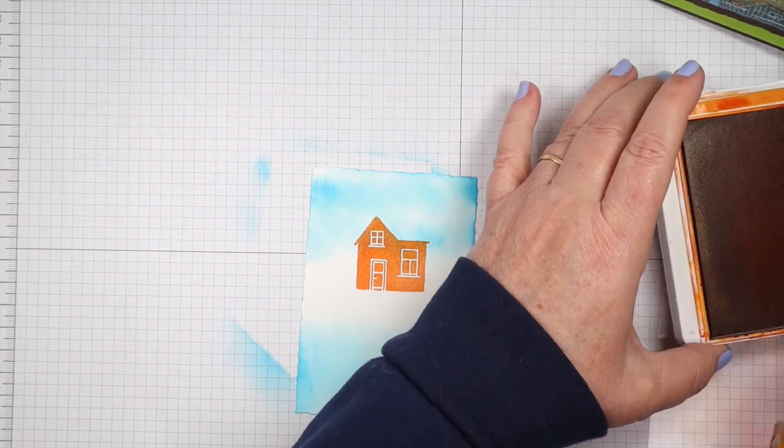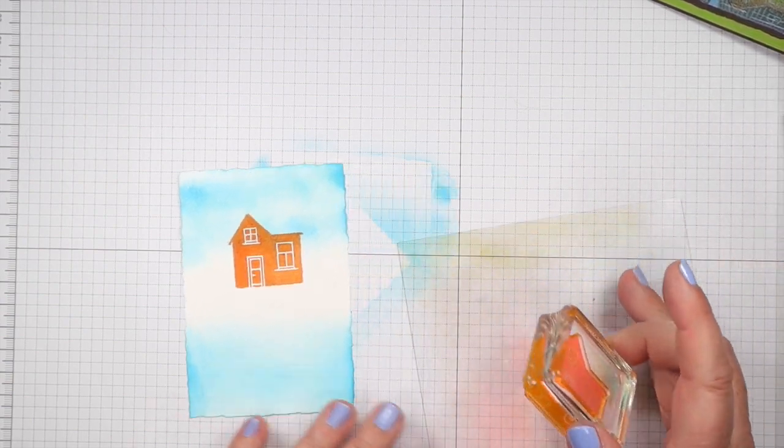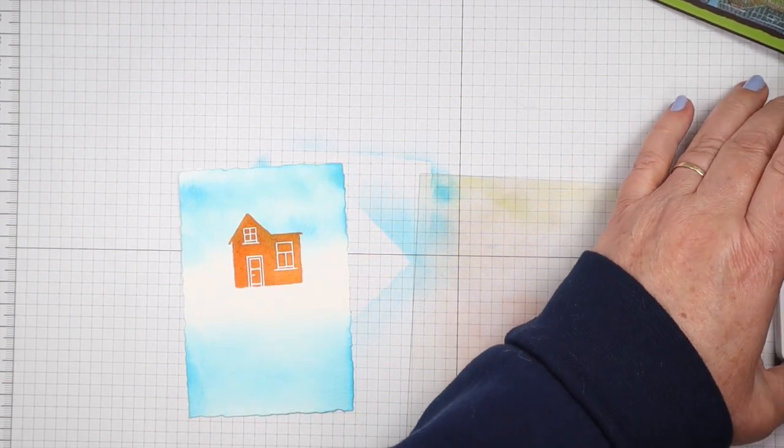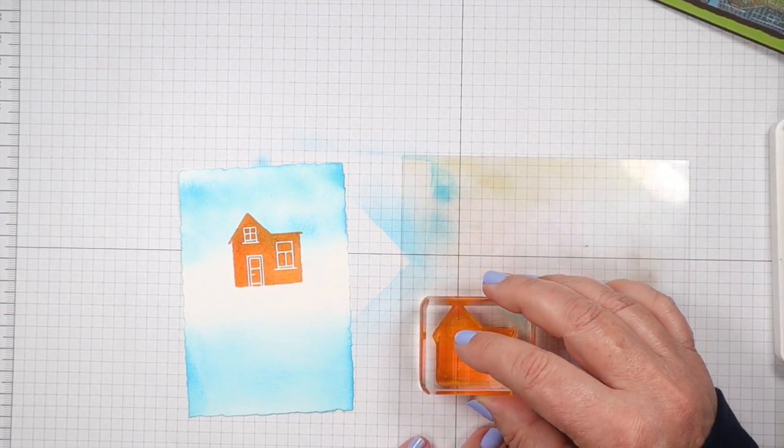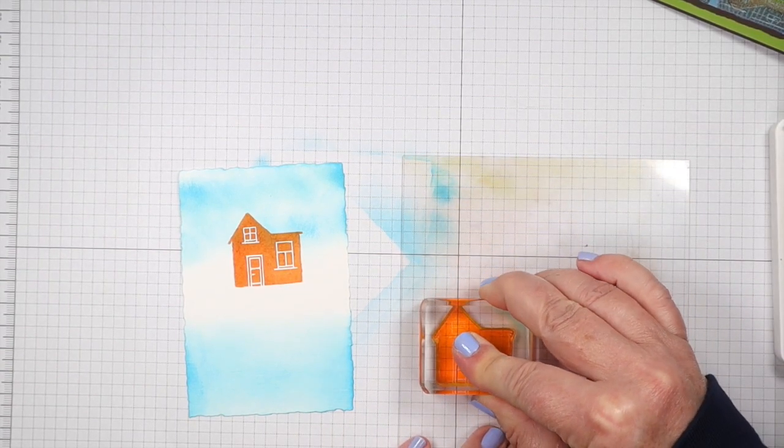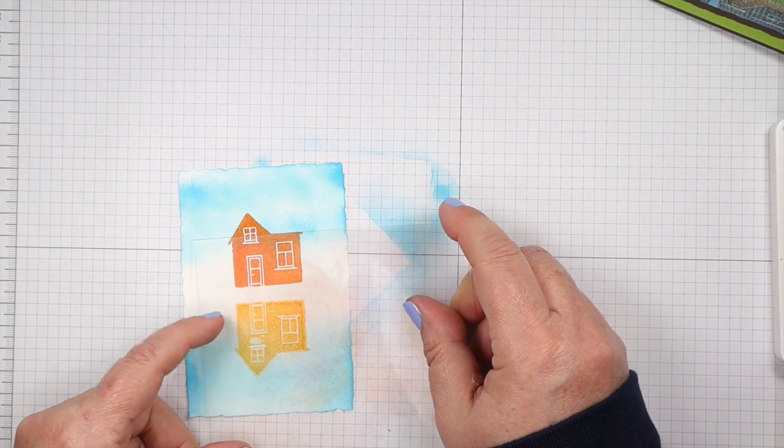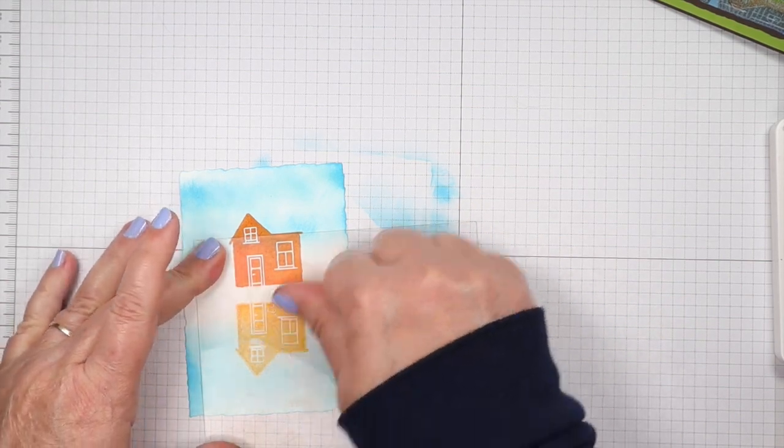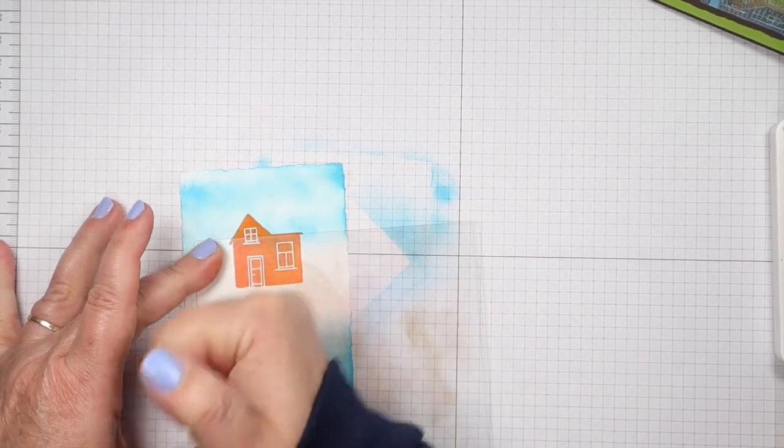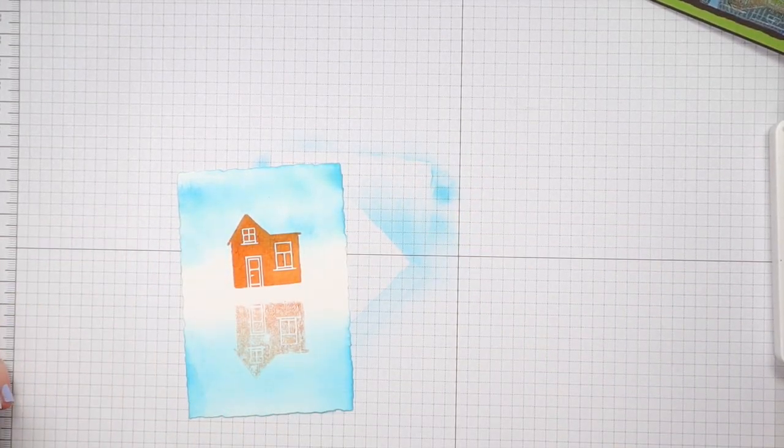And then I need to stamp another one upside down for our reflection. So what I'm going to do is I'm going to take this stamp and I'm going to load it up with that pumpkin pie. I'm going to stamp it on my plastic piece here. And then I'm just going to flip it over and I want a bit of a gap in between those two images. I'm just going to lay that down and I'm going to rub the back of it. And there is our reflection.